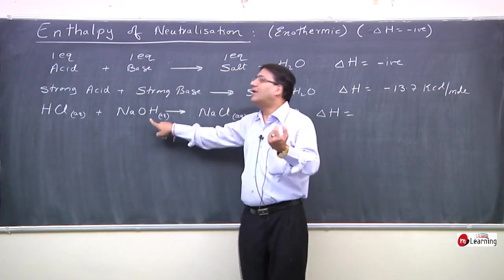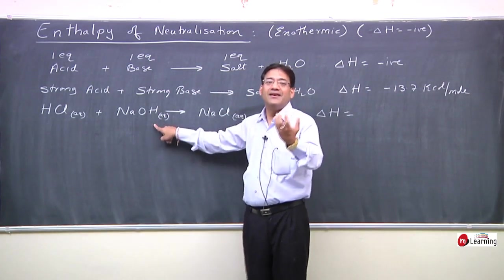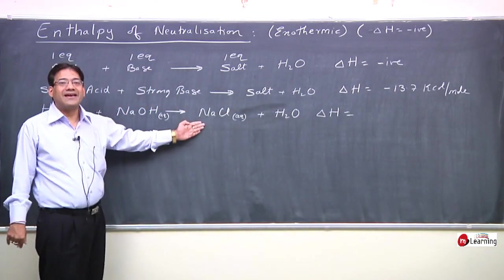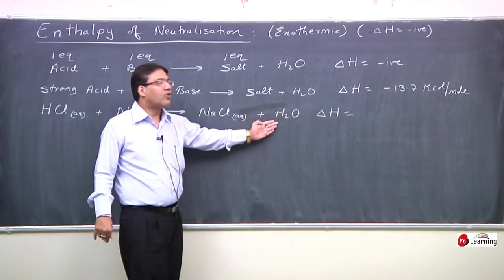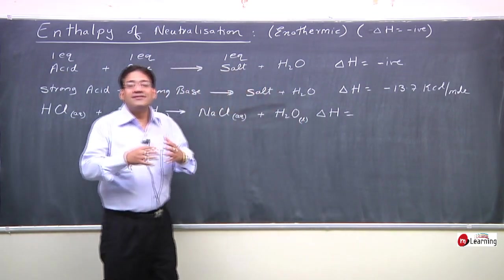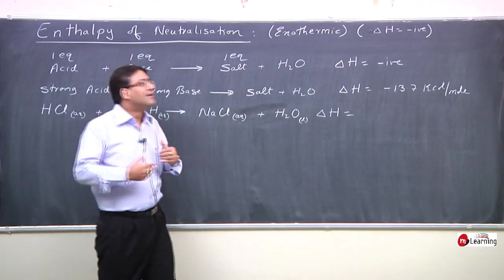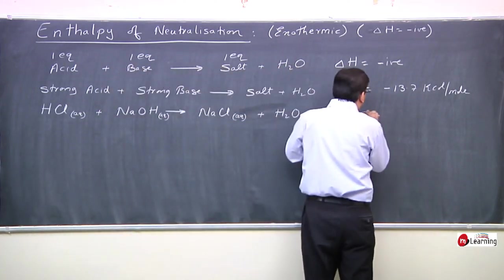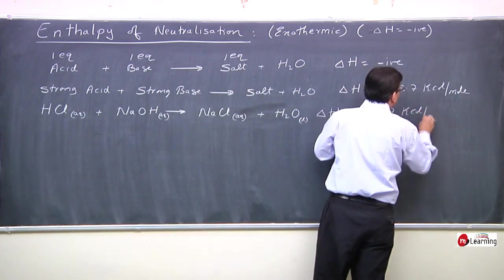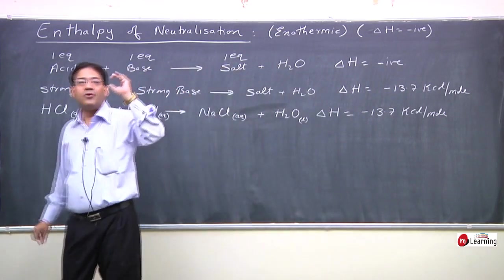One mole of HCl and one mole of NaOH react and neutralize each other. One mole of NaCl and one mole of water are obtained. Since this is a neutralization of a strong acid and strong base, the enthalpy of neutralization is found to be minus 13.7 kcal per mole.